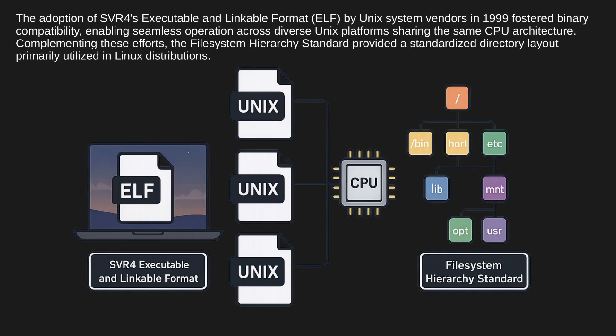The adoption of SVR4's Executable and Linkable Format (ELF) by Unix system vendors in 1999 fostered binary compatibility, enabling seamless operation across diverse Unix platforms sharing the same CPU architecture. Complementing these efforts, the Filesystem Hierarchy Standard provided a standardized directory layout primarily utilized in Linux distributions.